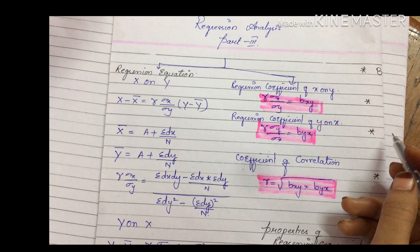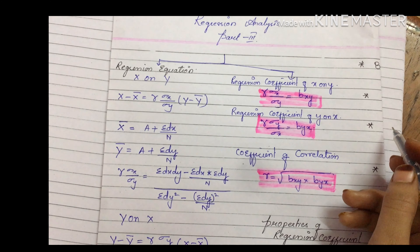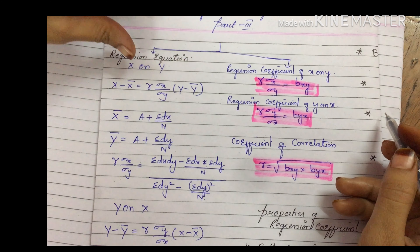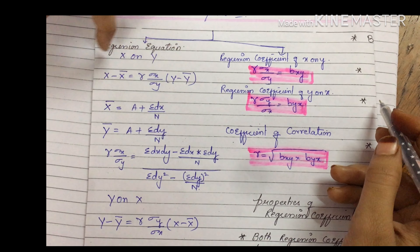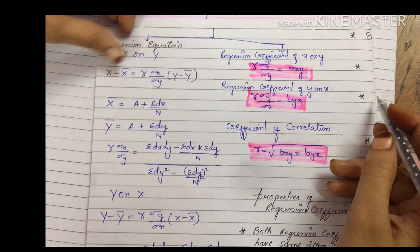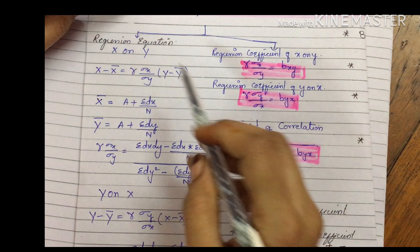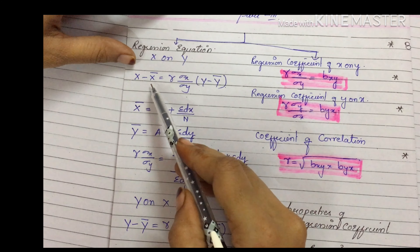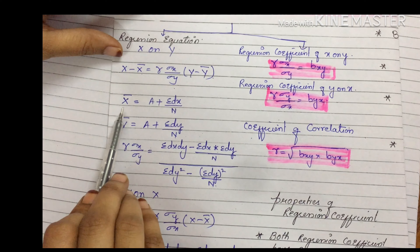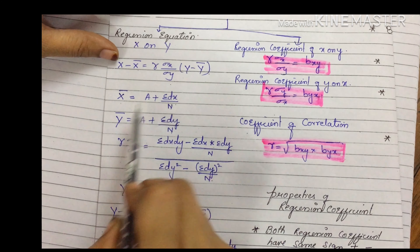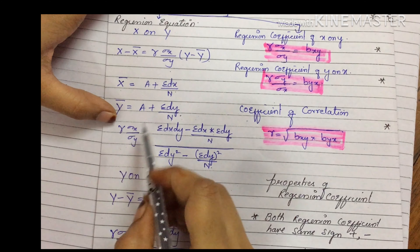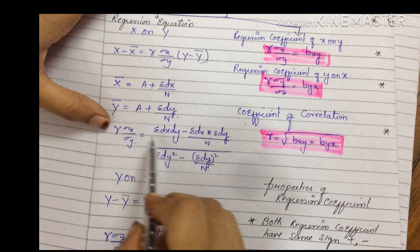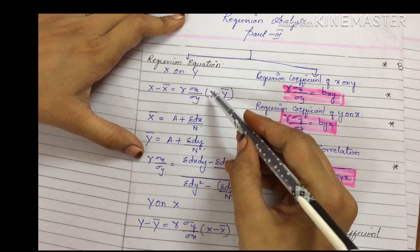Let us take a quick review on previous parts. We have seen the regression equation x on y. The formula is: x minus x-bar equals r times standard deviation of x divided by standard deviation of y, times y minus y-bar. We need to find x-bar, y-bar, and the ratio of standard deviations.